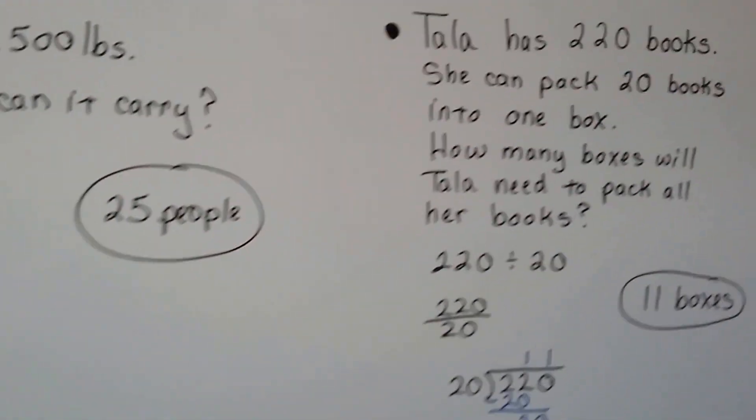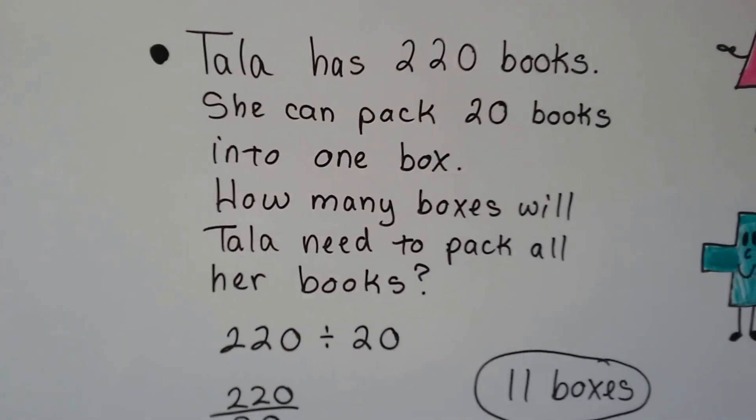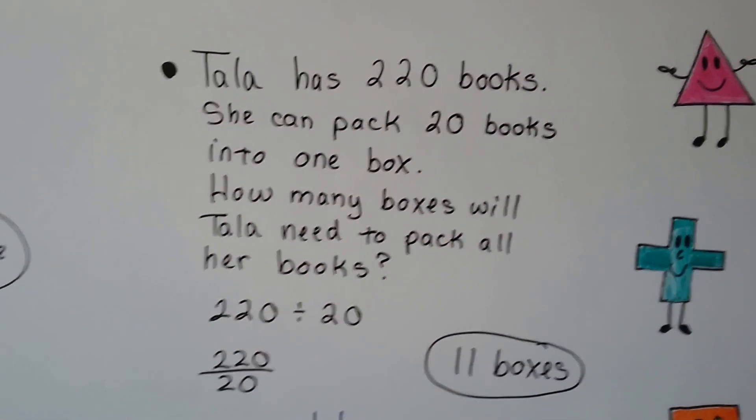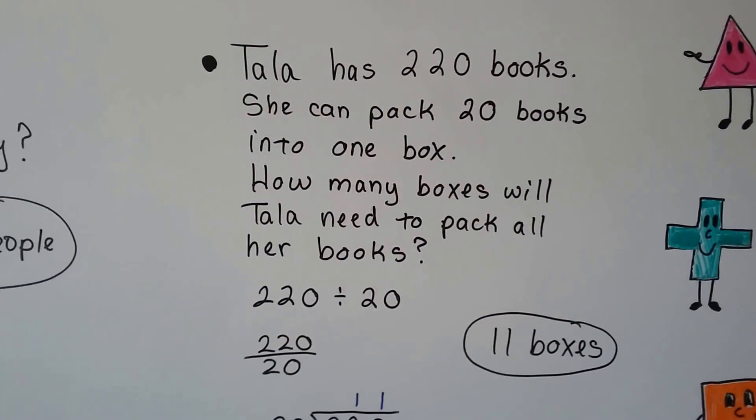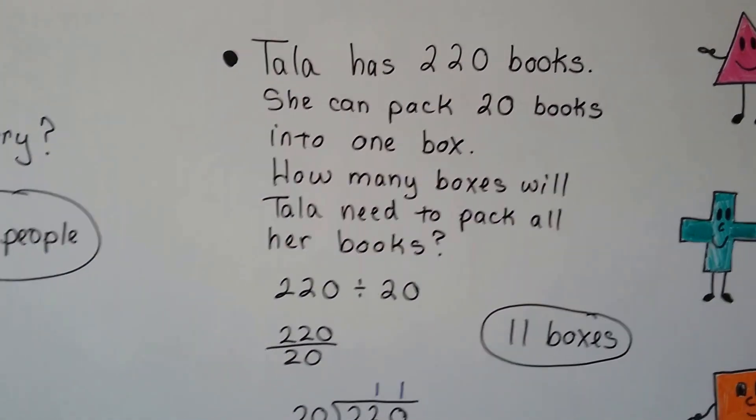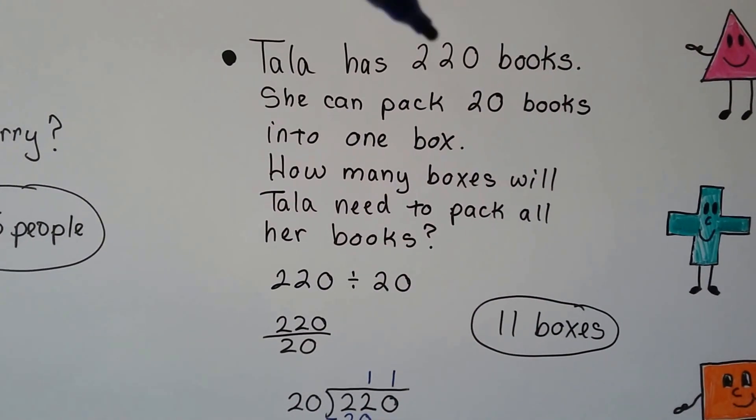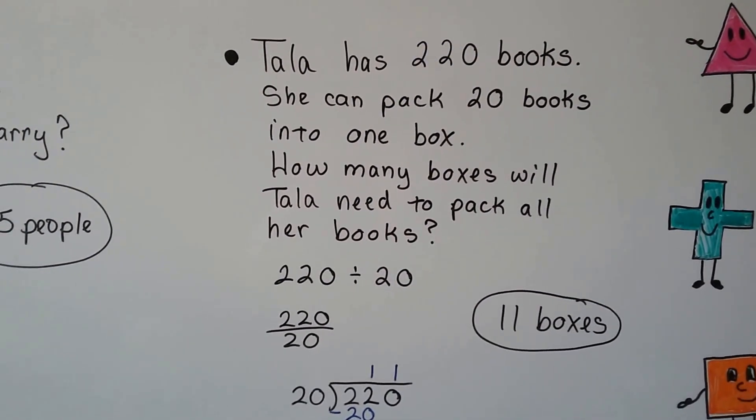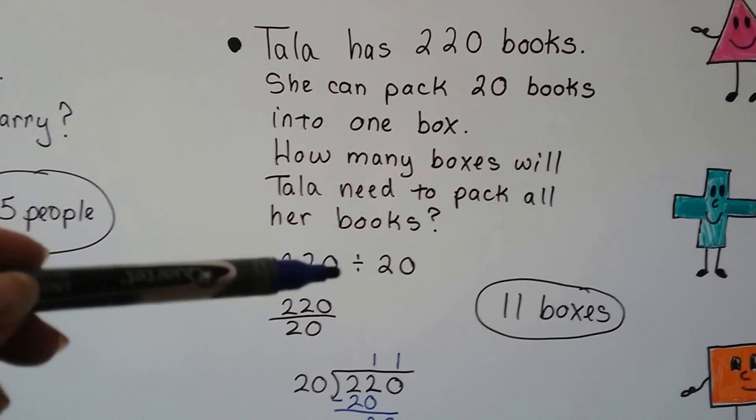Let's take a look at this one. Tala has 220 books and she can pack 20 books into one box. Now all boxes are the same size. So how many boxes will Tala need to pack all her books? So she's got 220 and each box is going to carry 20. So we do 220 divided by 20.